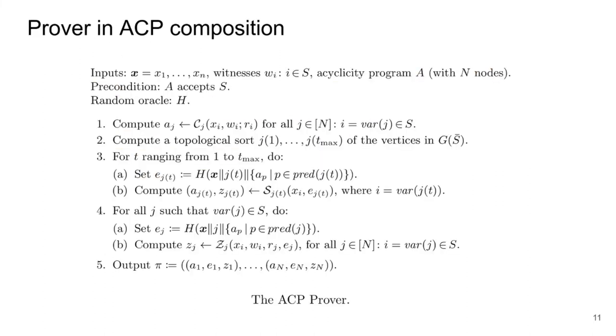This is the description of our ACP composition prover. We just want to highlight that the general algorithm is essentially the same that we have described in our previous example. The prover will start all transcripts for which she knows a witness. This will relax some dependencies and will allow her to simulate those transcripts whose dependencies have disappeared. If the set of witnesses satisfies the acyclicity program, this process is guaranteed to finish by simulating all transcripts for which a witness is not known. Finally, the prover can complete the initially started transcripts by using the corresponding witnesses.